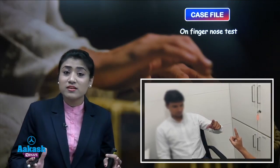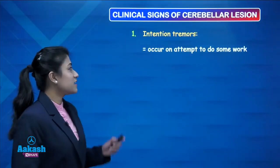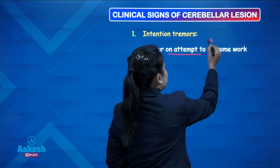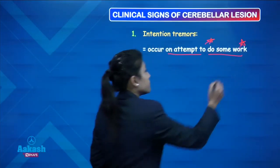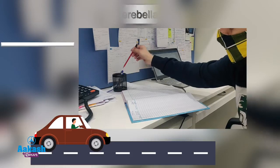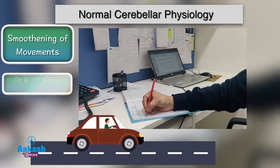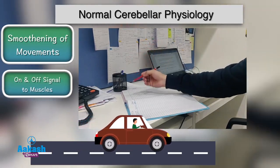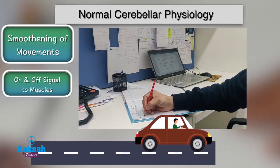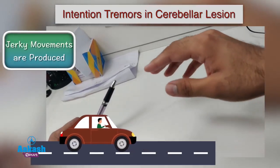He's suffering from a cerebellar lesion. Let's discuss various clinical signs of cerebellar lesion, starting with intention tremors. These tremors occur when a patient attempts to do some work. Our cerebellum is like the brake and gear of a car — it makes movement smooth like the gear, and gives on and off signals to muscles like the brake, helping in precise movements. In cerebellar lesion, jerky movements are produced causing intention tremors.